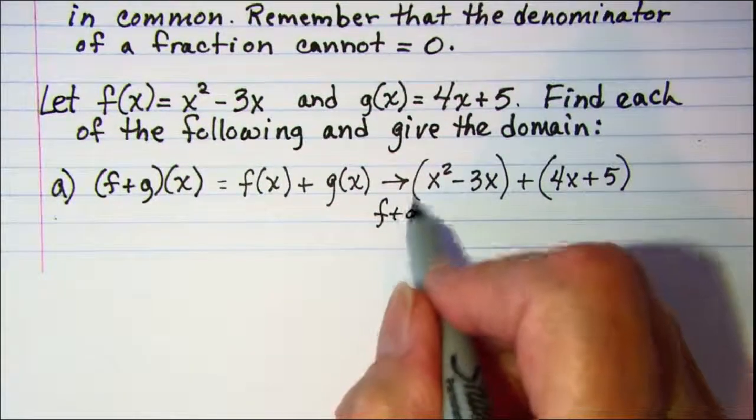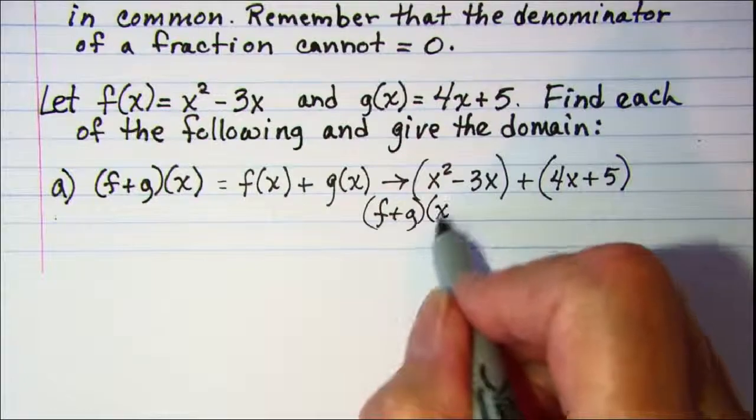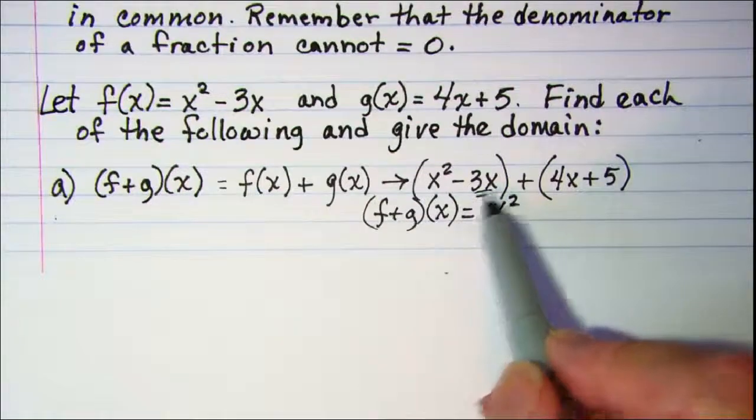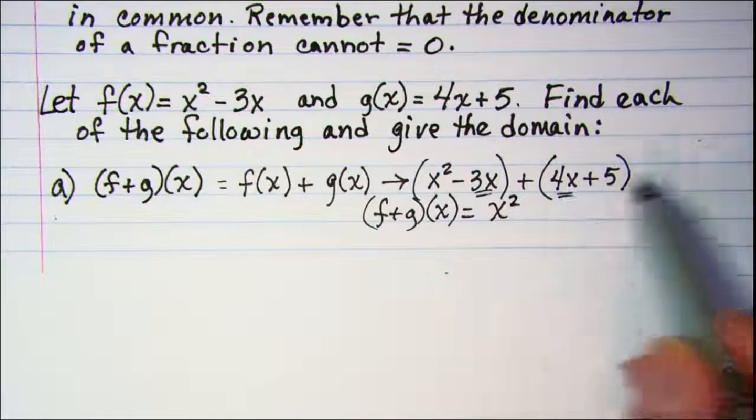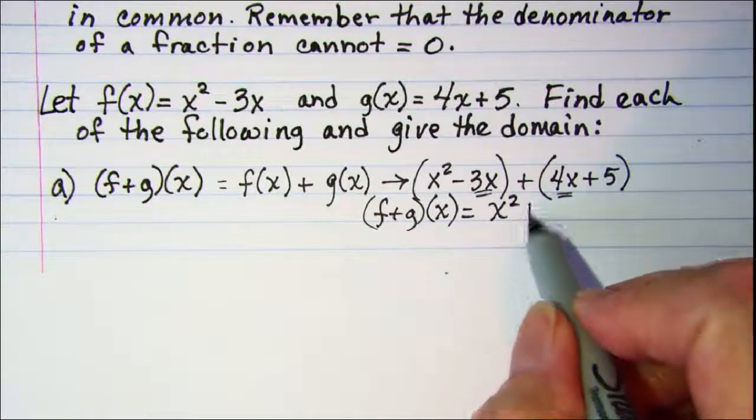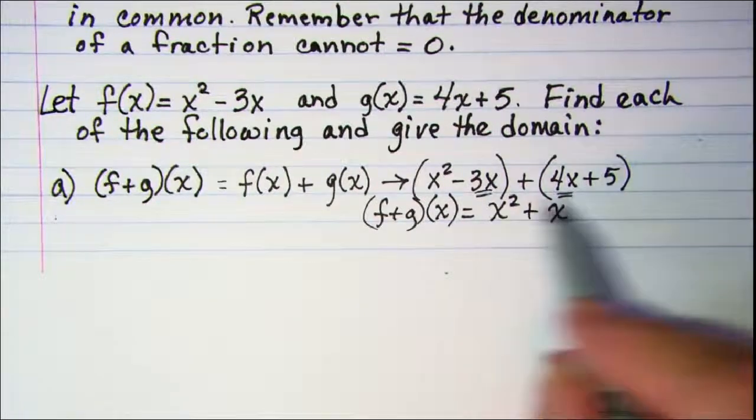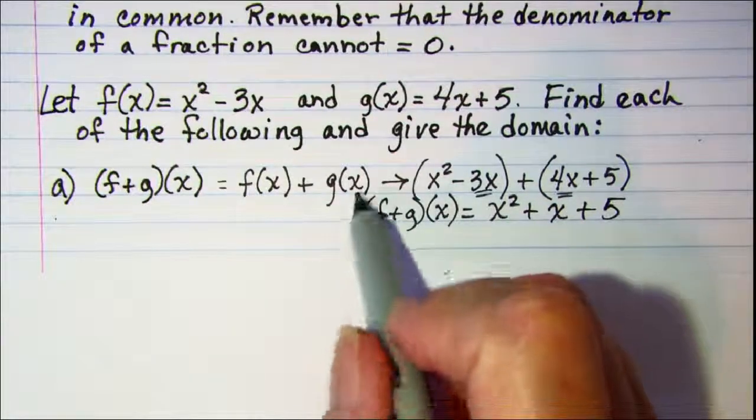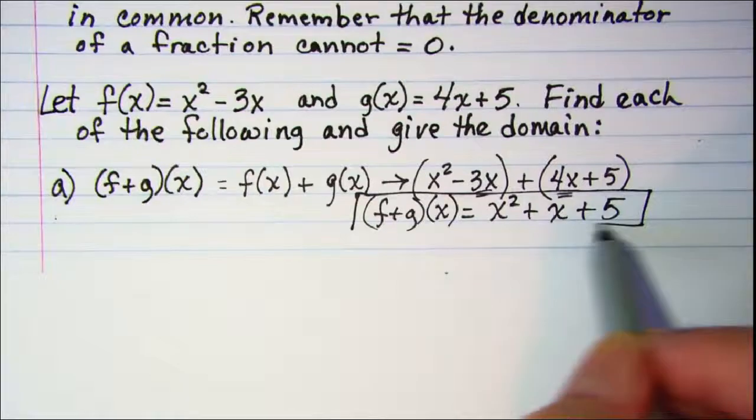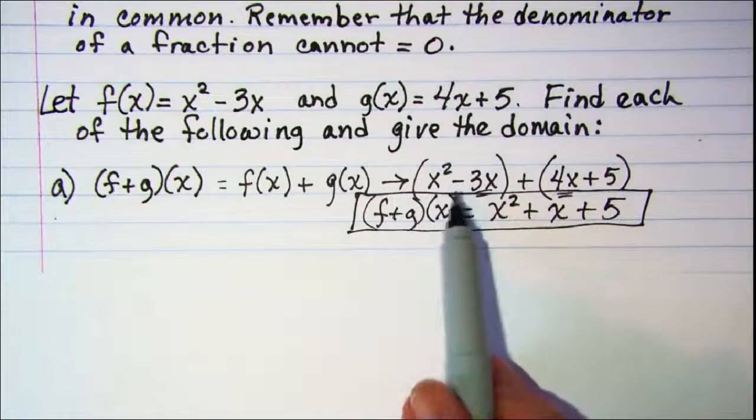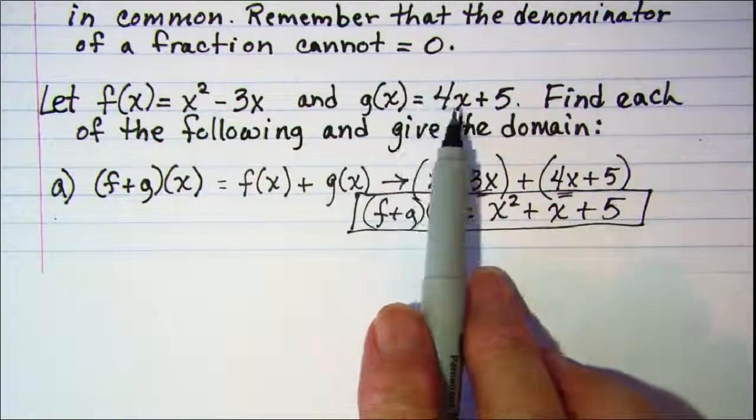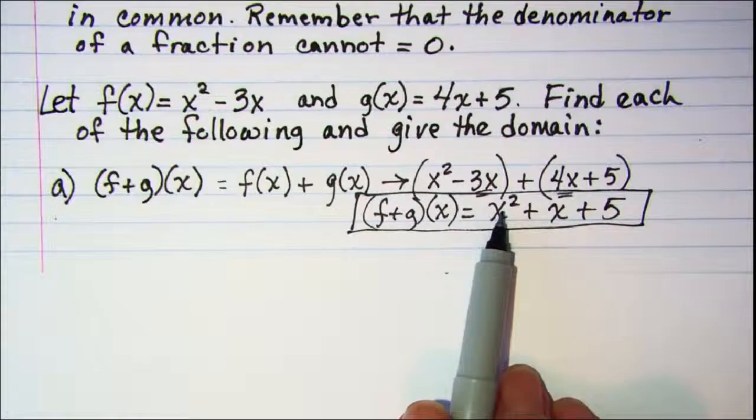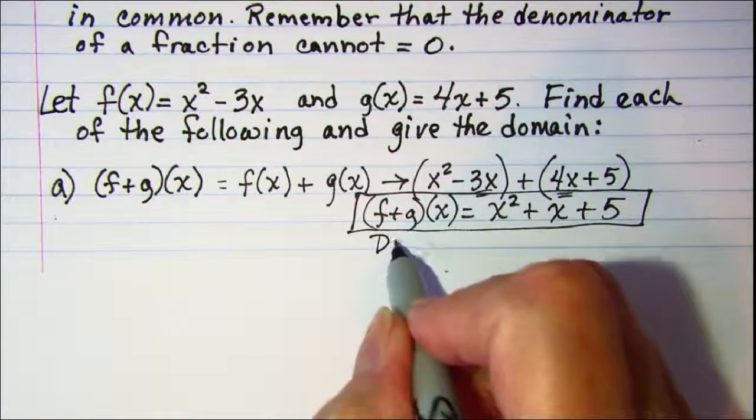f plus g of x is x squared, and then when we add negative 3x and 4x we get x, and then plus 5. Since there's no restrictions on the domain of f or the domain of g, then the domain of the sum of the two functions will just be all real numbers.